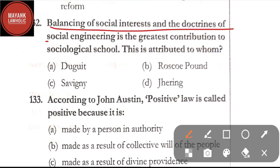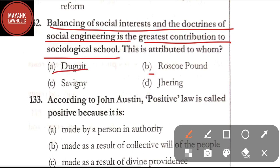Question number 132: balancing of social interest and the doctrine of social engineering is the greatest contribution to sociological school — this is attributed to whom — option A: Dugout; option B: Roscoe Pound.